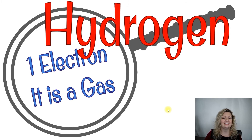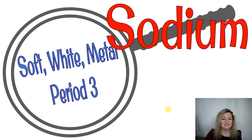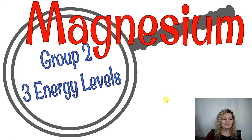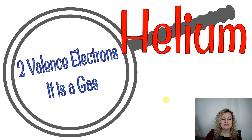One electron and it's a gas — it's definitely hydrogen. A noble gas with 10 neutrons — that would be neon. Soft white metal in period three — that's sodium. Group two with three energy levels — that's magnesium. Three valence electrons with six neutrons — that's boron. Two valence electrons and it's a gas — that's helium.